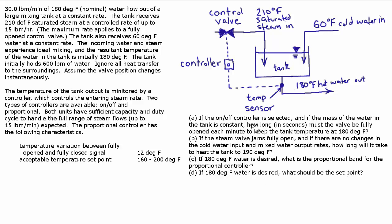Part A is about steady state — they want to know if the mass of the water in the tank is constant, meaning the same amount of steam and water going in as water coming out, and they want to keep the tank temperature constant. Part B is more interesting because the steam valve jams fully open, so you're adding more steam than you need. That means the temperature and the mass in the tank are both going to rise — it's not steady state, so it requires differential equations to solve.